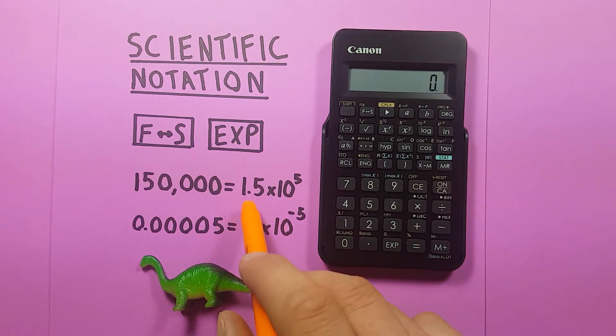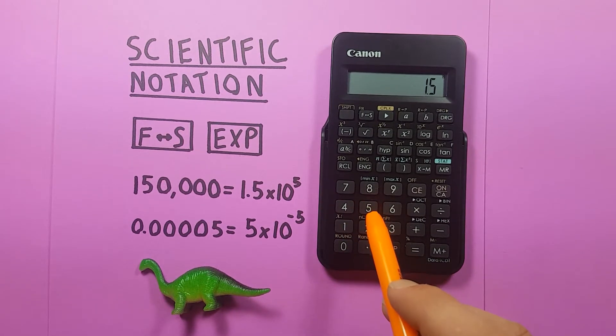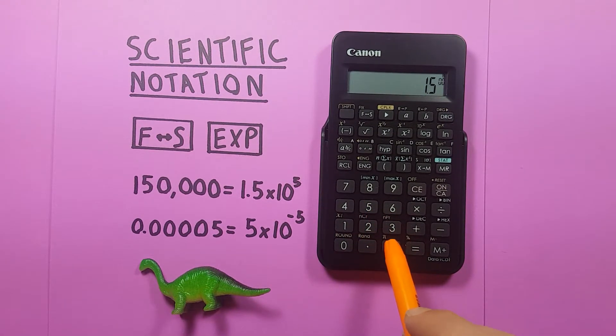So if we have 1.5 times 10 to the power of 5, we would enter 1.5, EXP key, 5, because that's our exponent.